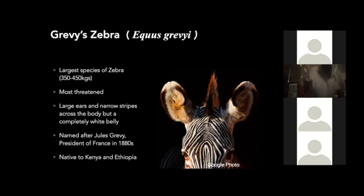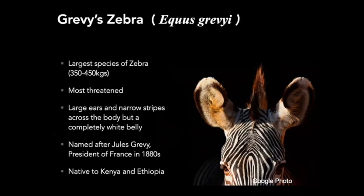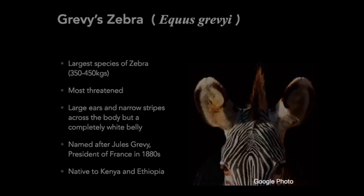Grévy's zebras have very prominent large ears in comparison to other zebras, large bodies, and very thin narrow black stripes along the body with a permanent white belly. The Grévy's zebra was named after Jules Grévy, a president of France in the 1800s. Grévy's zebras are native to Kenya and Ethiopia, so when you travel to Africa you will most likely find them only in those two countries.